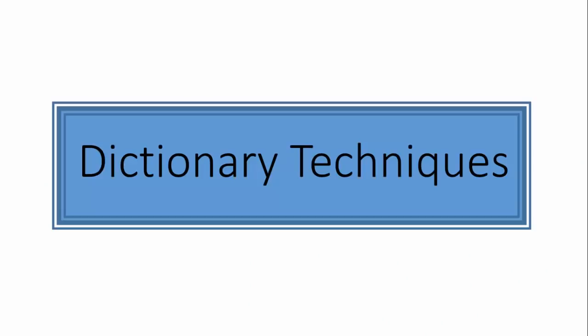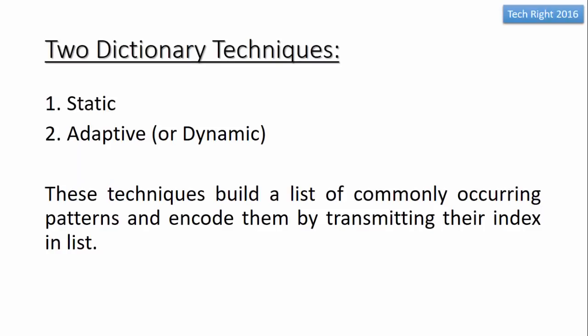Today I'm going to explain dictionary techniques. There are two dictionary techniques: the first is static and the second is adaptive. These techniques build a list of commonly occurring patterns and encode them by transmitting their index in the list.